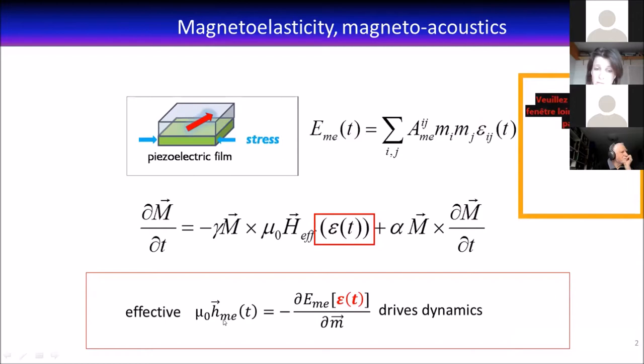When you think of a time-dependent strain, it's basically acoustic waves. These can be in pulse form, continuous wave, or bulk wave acoustic waves generated in different ways. The two main ways are thermal elasticity and piezoelectricity, and that's the one we've been working with.